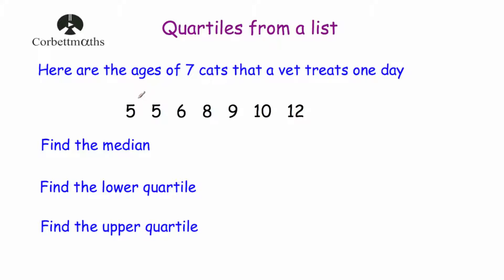So let's have a look at finding the quartiles from a list of data. Here are the ages of seven cats that visit a vet: 5, 5, 6, 8, 9, 10 and 12 years old. We've been asked to find the median — that's quite easy, it's the point in the middle. Now we want to find our lower quartile, which is the 25th percentile, the point a quarter of the way through. If we look at the bottom 50% of the data — 5, 5 and 6 — the lower quartile is found by finding the midpoint of those, which is 5. So 5 is our lower quartile.